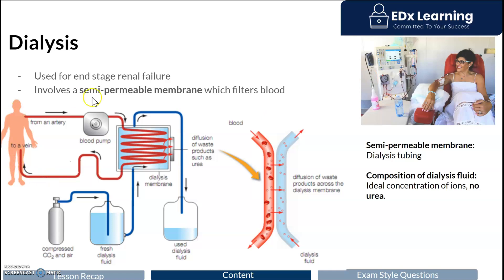You can see a schematic diagram here. The key is to understand that blood must move through a semi-permeable membrane. Recall, the glomerulus is a semi-permeable capillary network, and this is exactly what we're aiming to model with dialysis and with the dialysis tubing here.